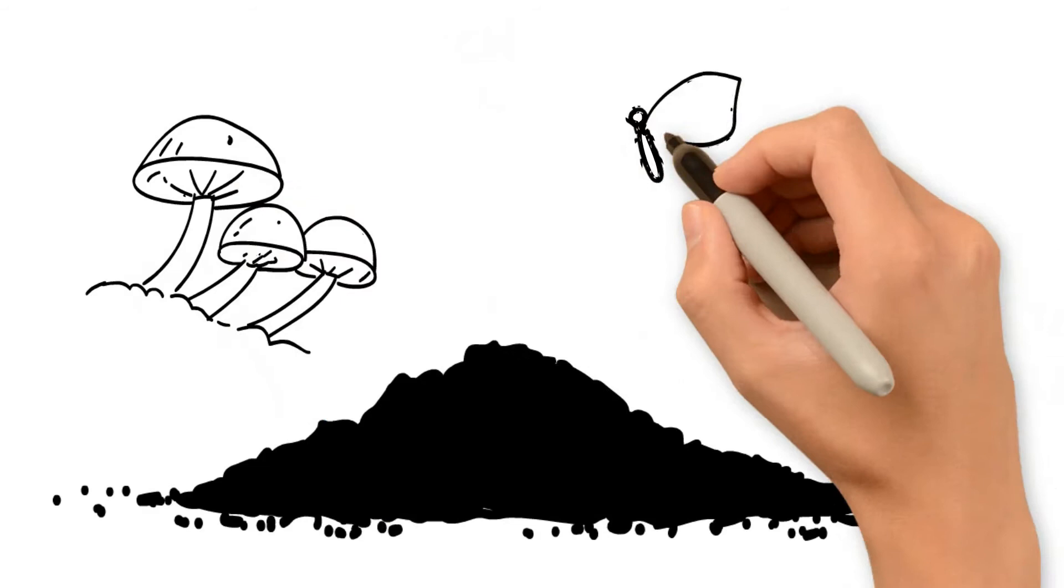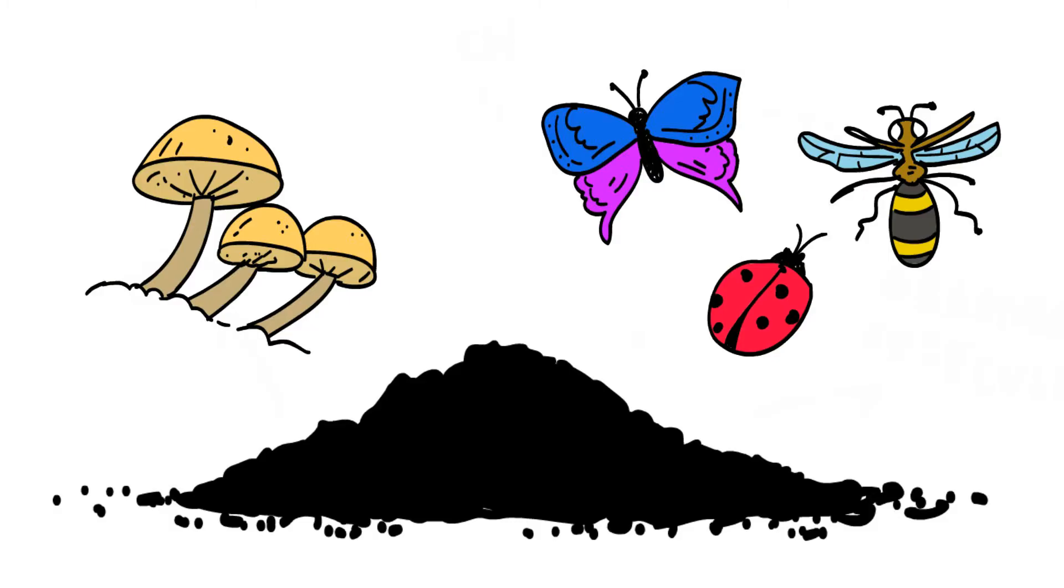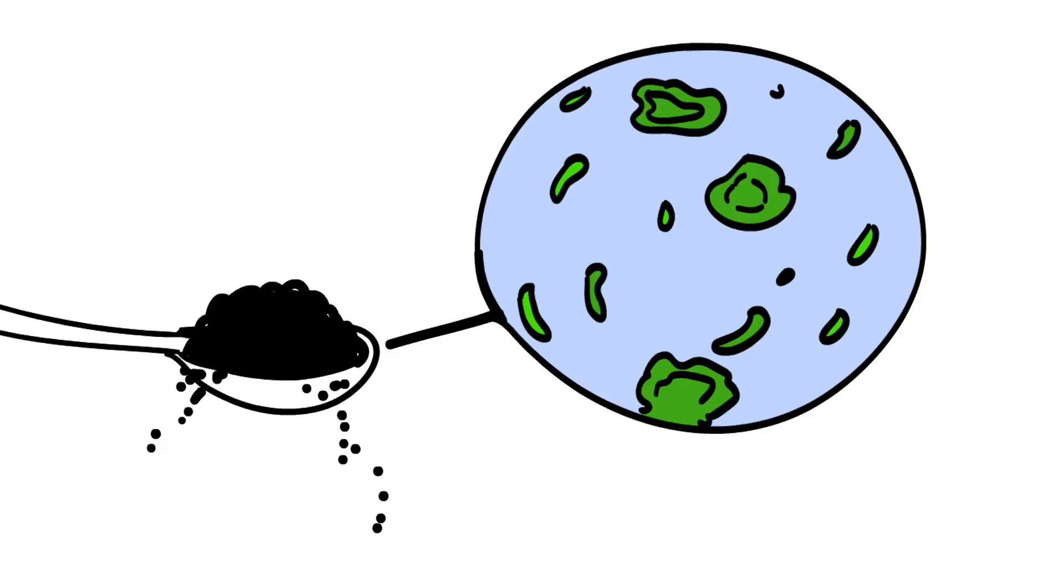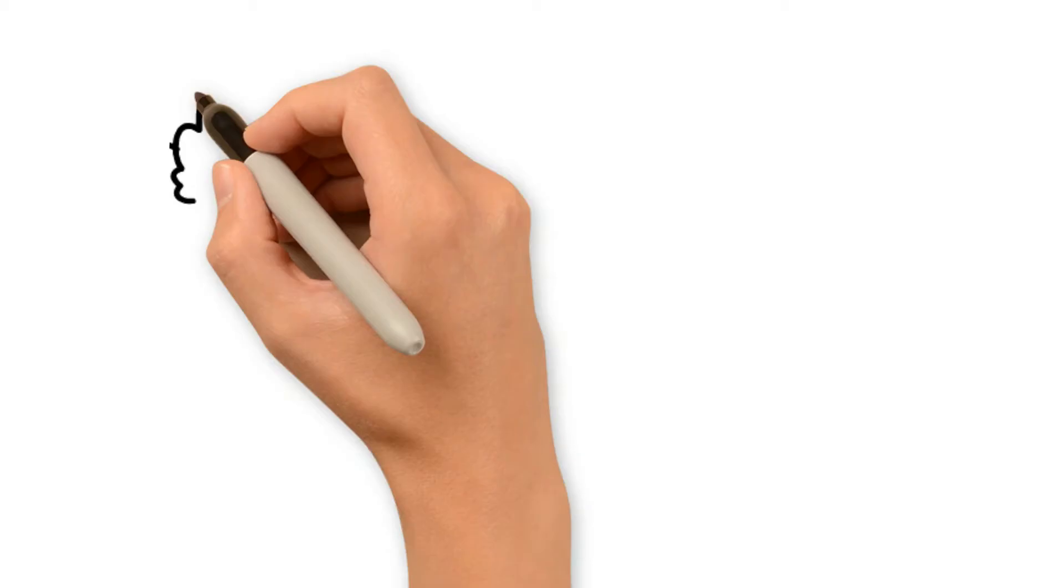In fact, in one teaspoon of humus, there is around 100 billion microbes and microorganisms. These little fellows play a very important role in breaking down organic matter, so that it can be used as nutrients by plants.